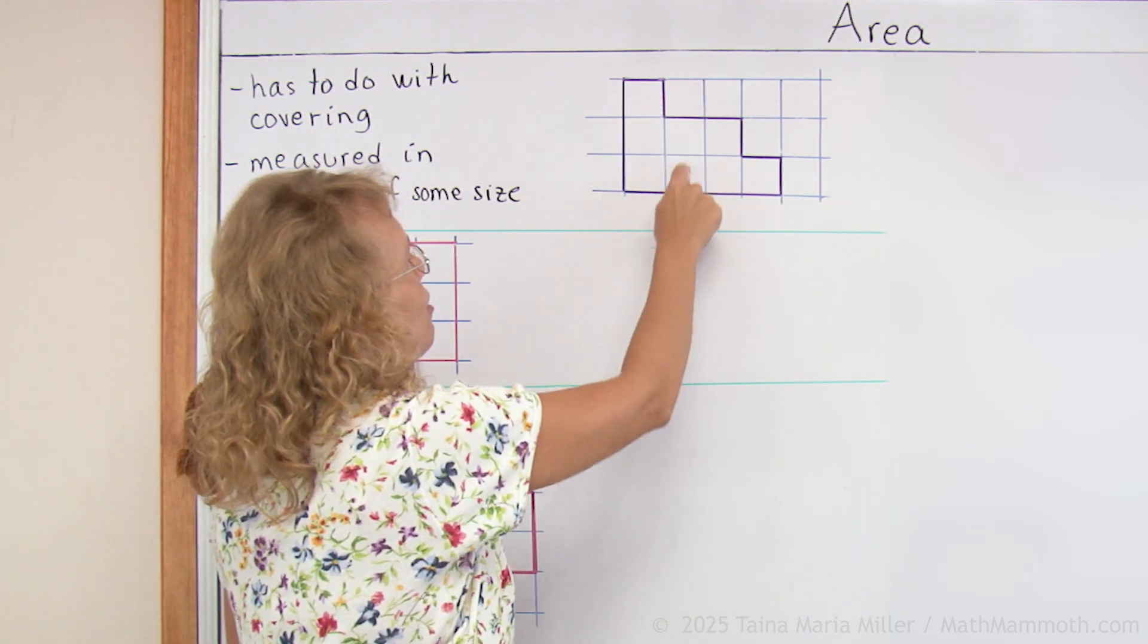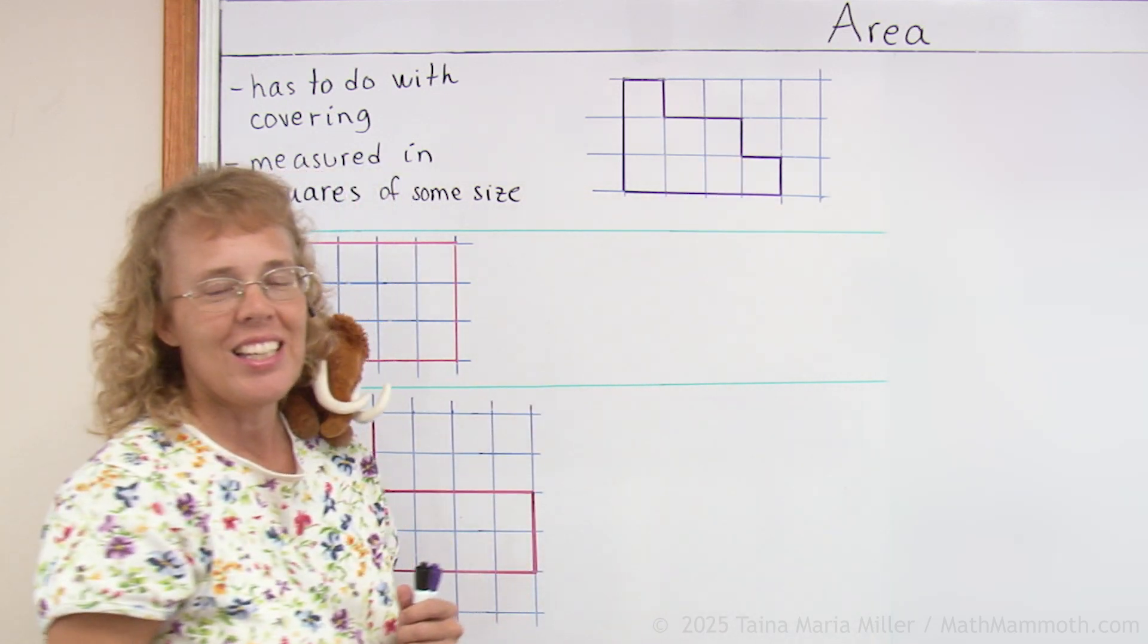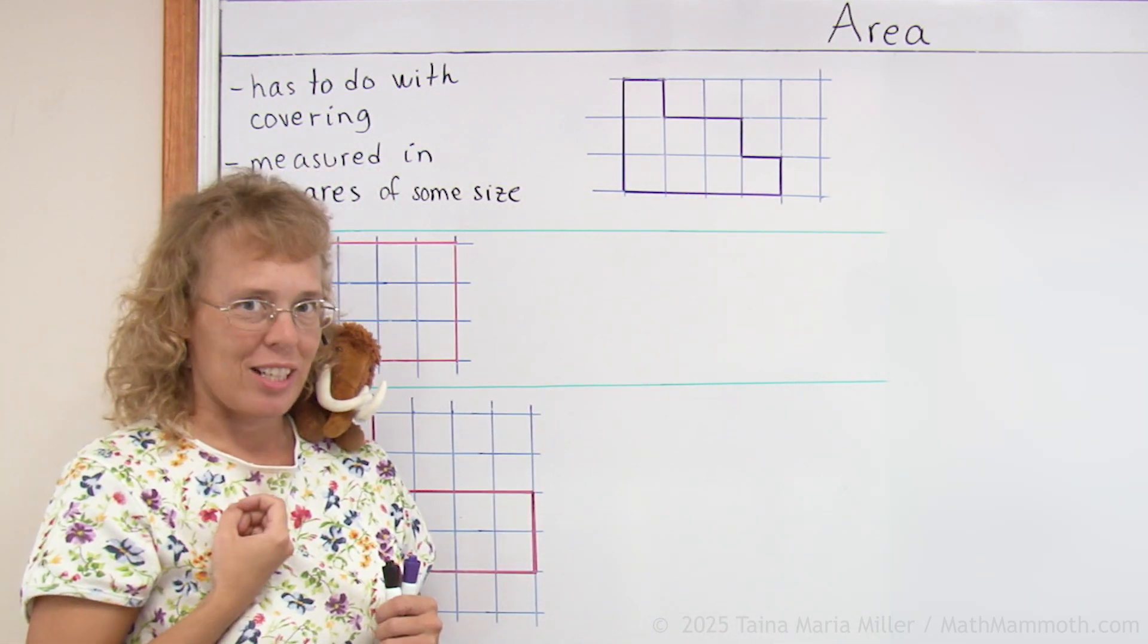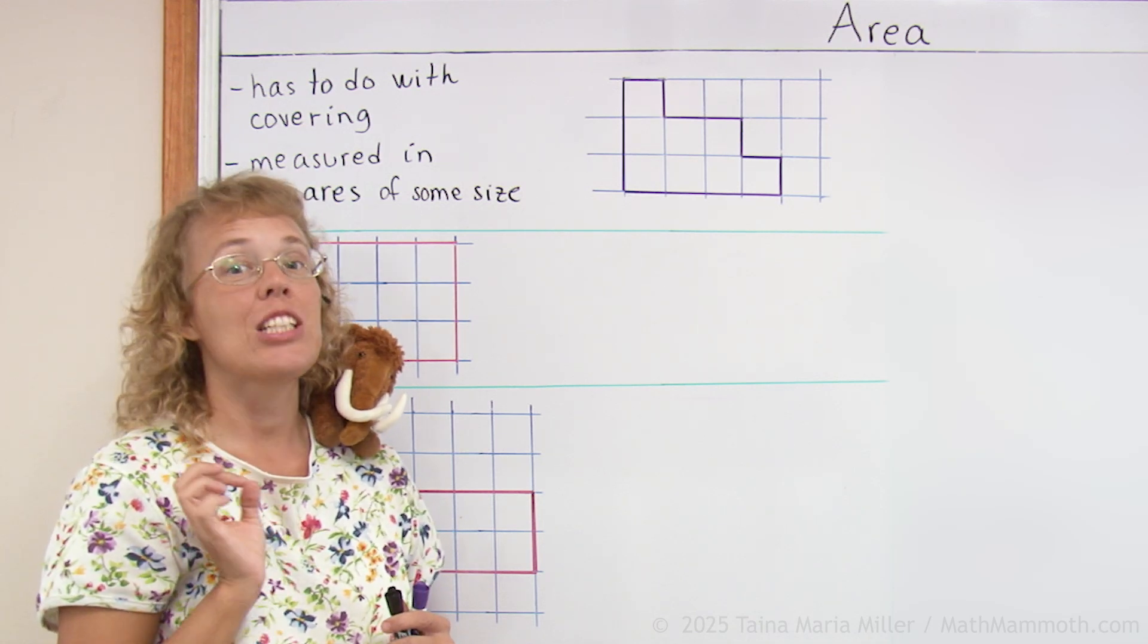So I can count 1, 2, 3, 4, 5, 6, 7, 8. So the area is 8 squares or we can say 8 square units.